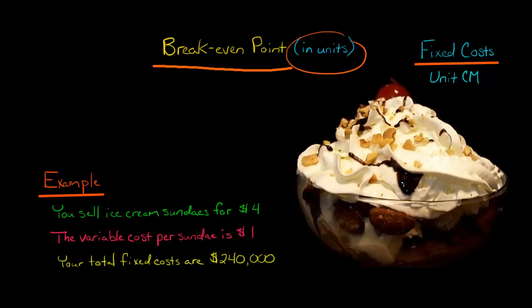Having this information and knowing this formula will allow you to solve for how many sundaes you need to sell to break even. Start with the numerator - your fixed costs. The fixed costs are $240,000, which are the costs you'll incur no matter how many sundaes you sell.